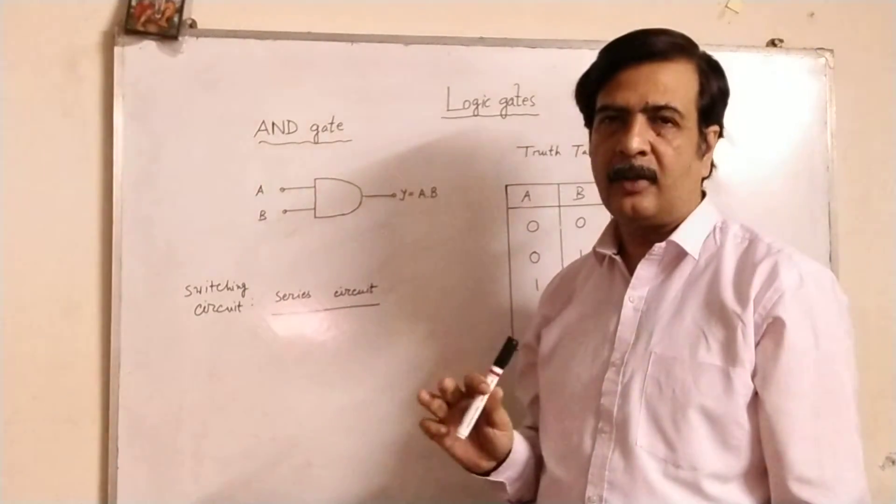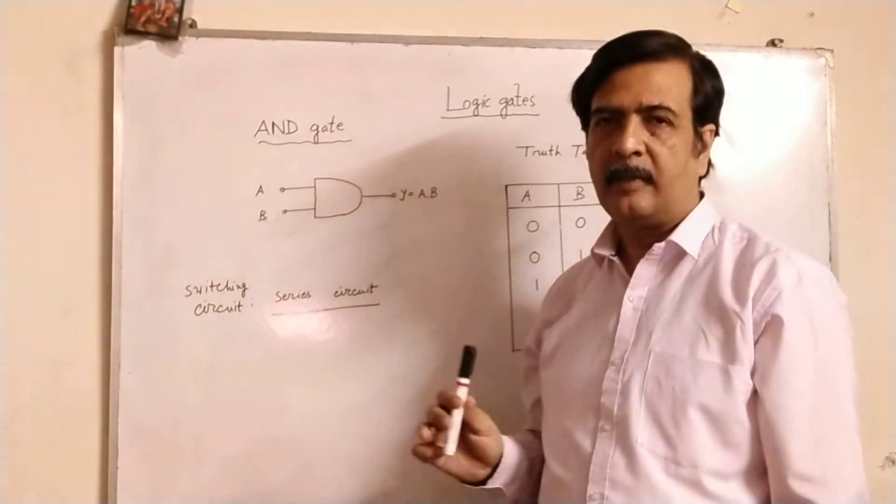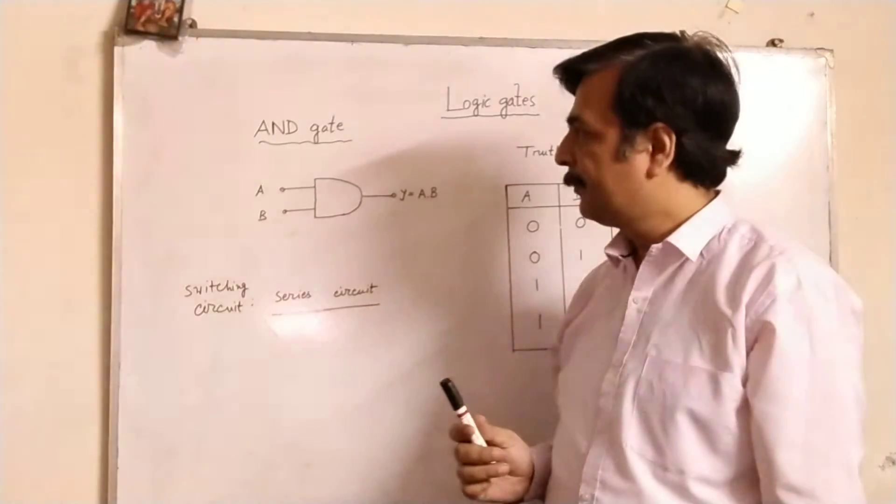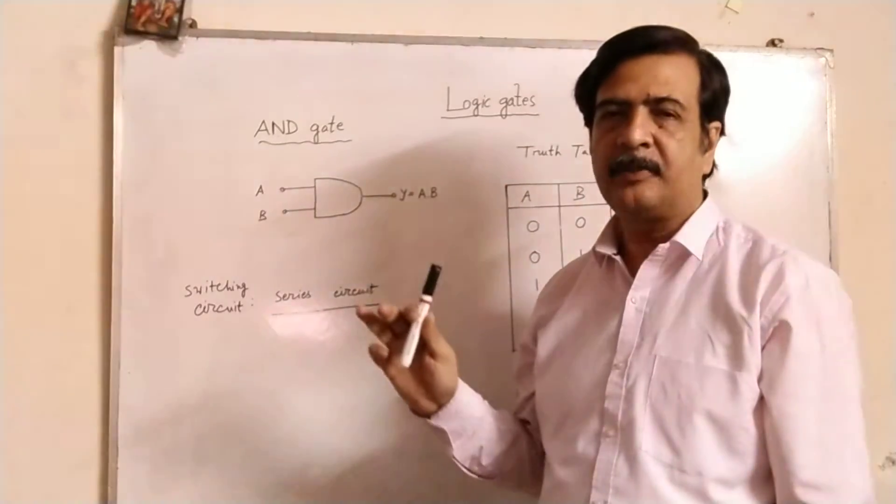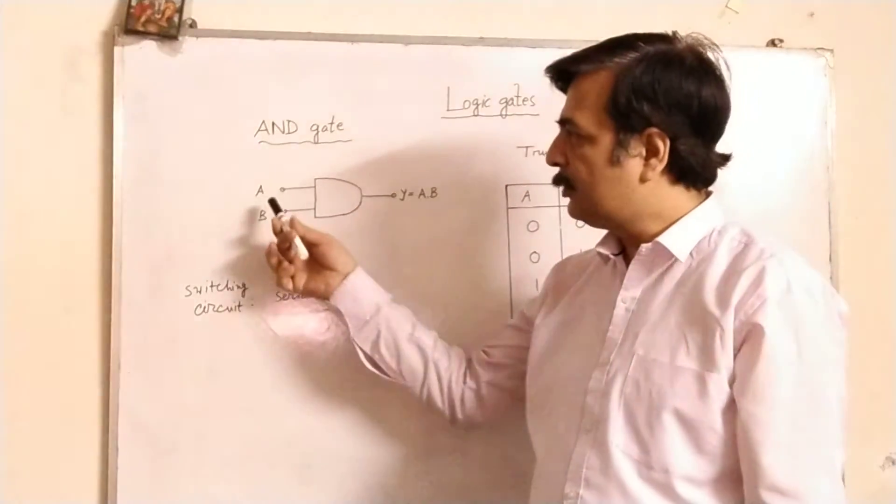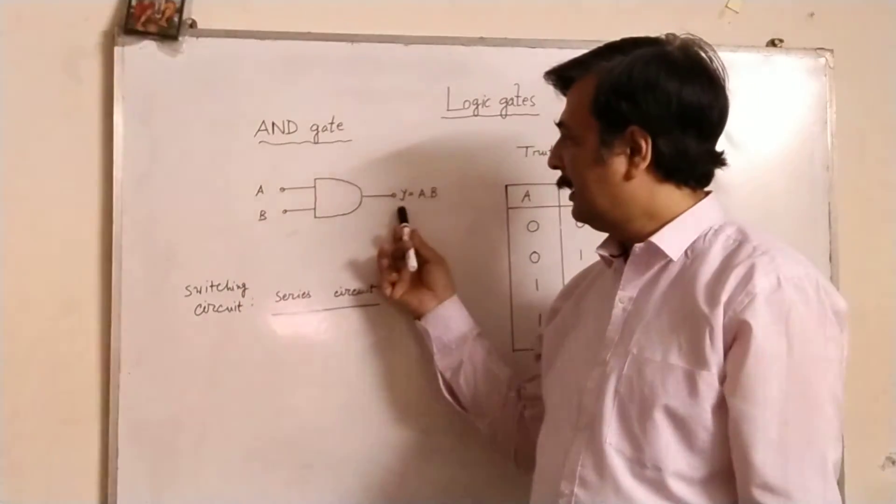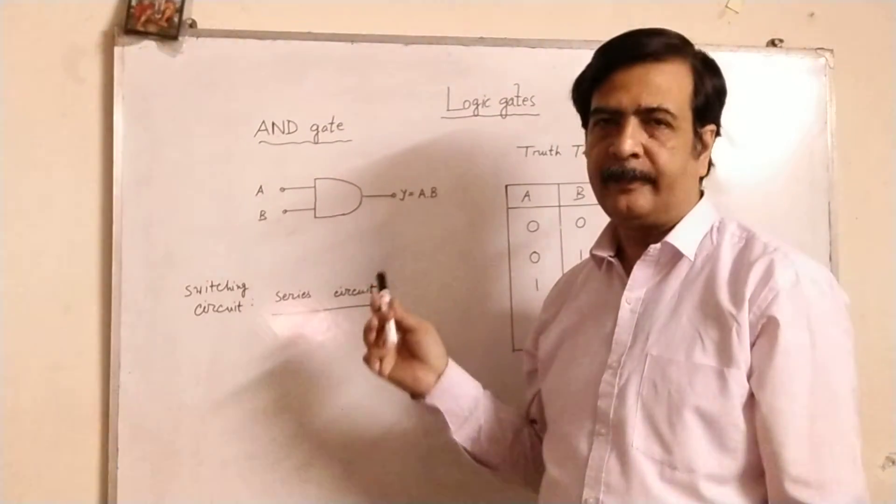So here what is the operation of this AND gate? This type of logic gate performs certain operations: addition, multiplication, inversion, like this. Here the operation is multiplication. So if the two inputs are A and B, the output is Y equals A into B.